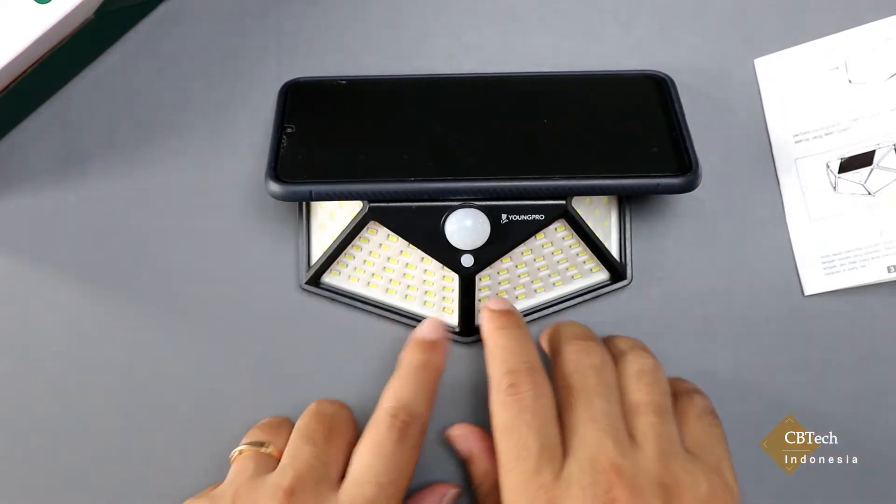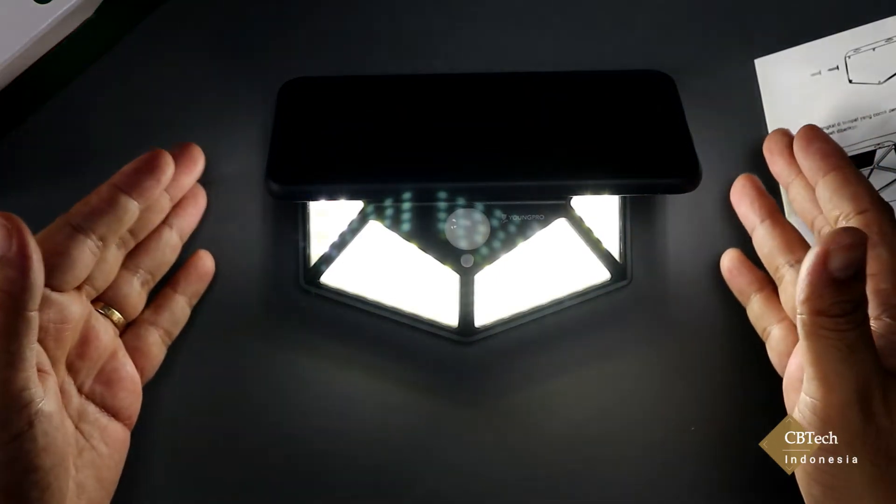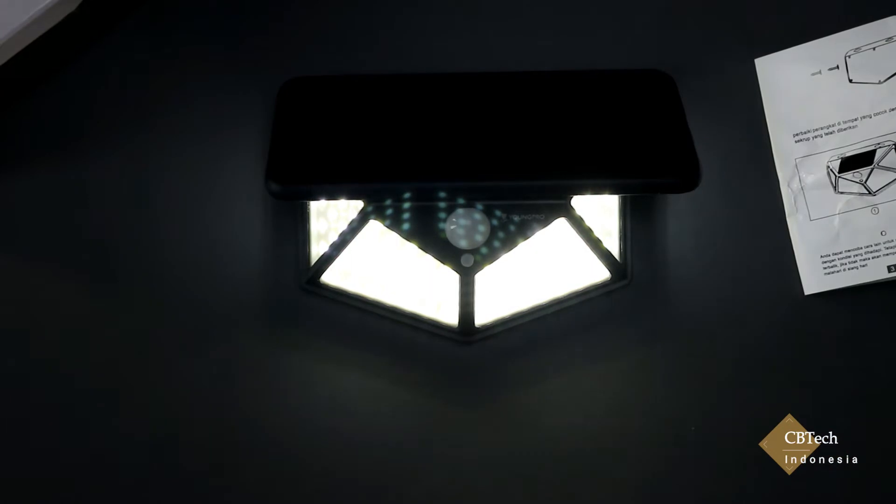Kemudian kita nyalakan. Nah ini begitu saya tutup solar cell yang ada di belakangnya, berarti ini seakan-akan sudah gelap, maka lampu akan menyala. Kemudian setelah itu akan mati 15 detik.